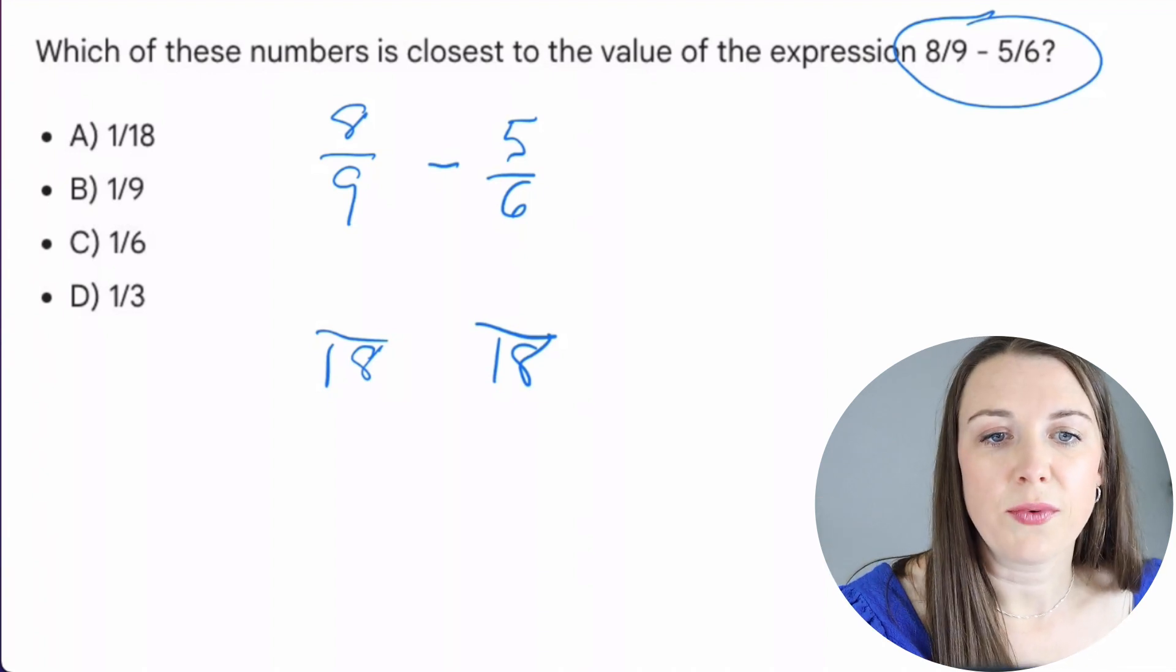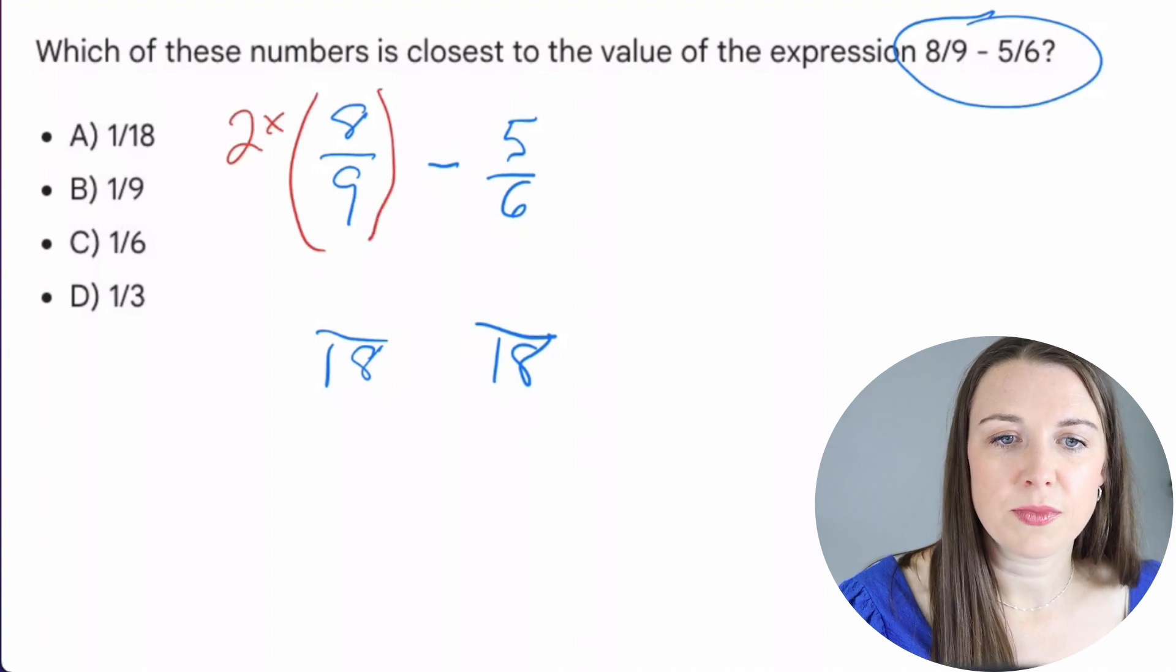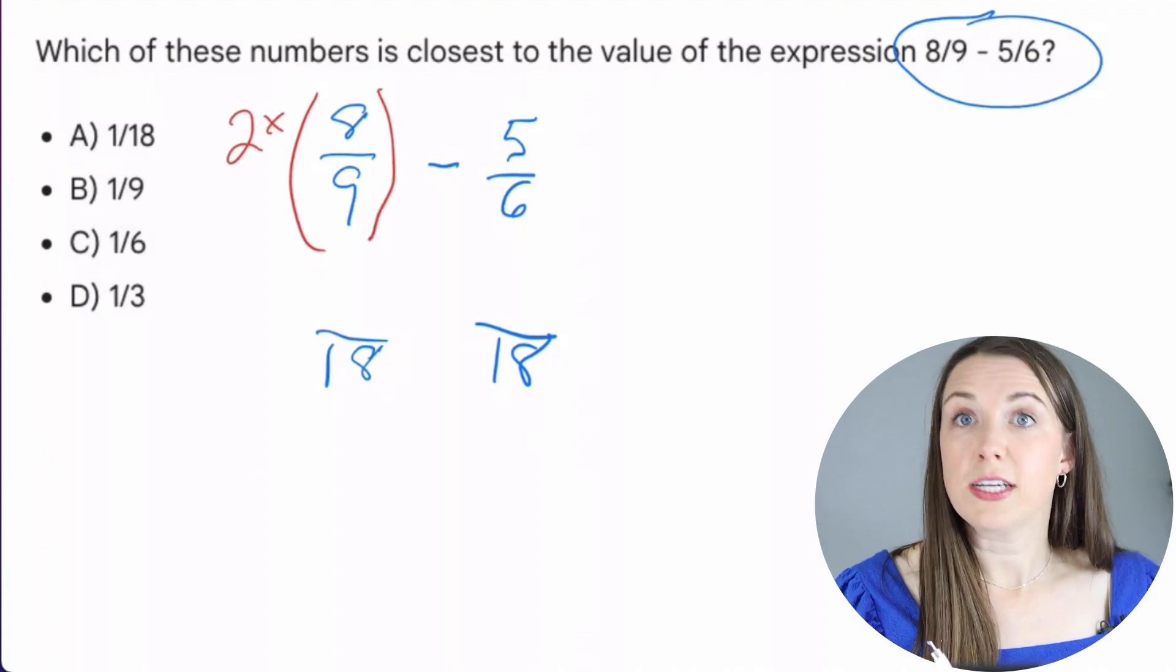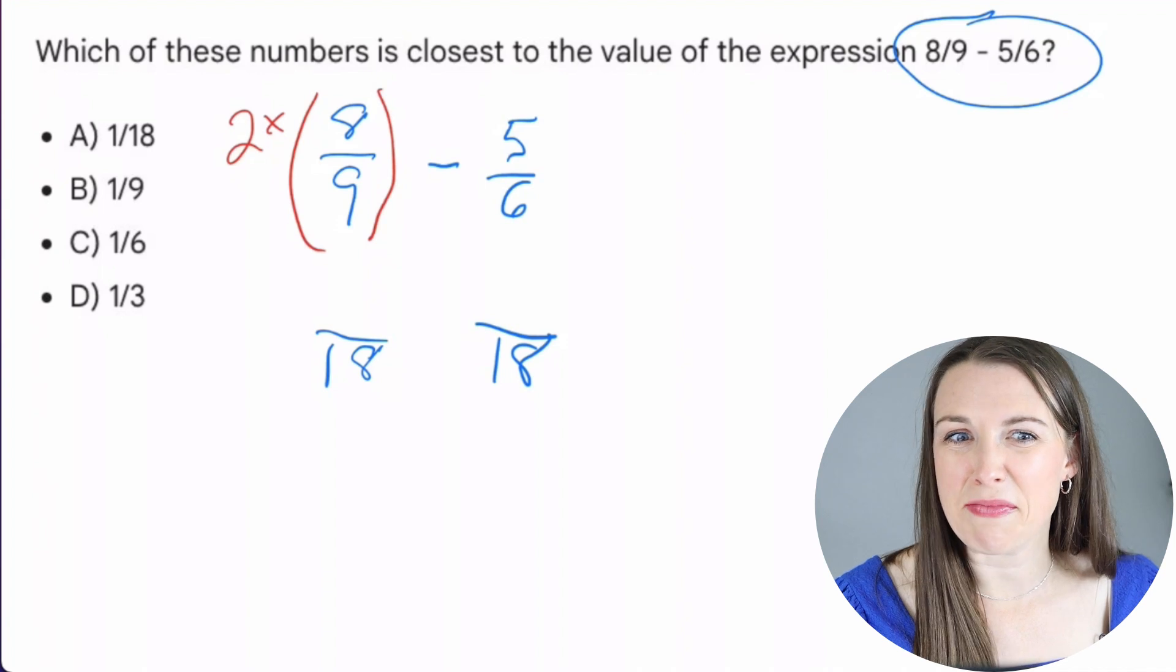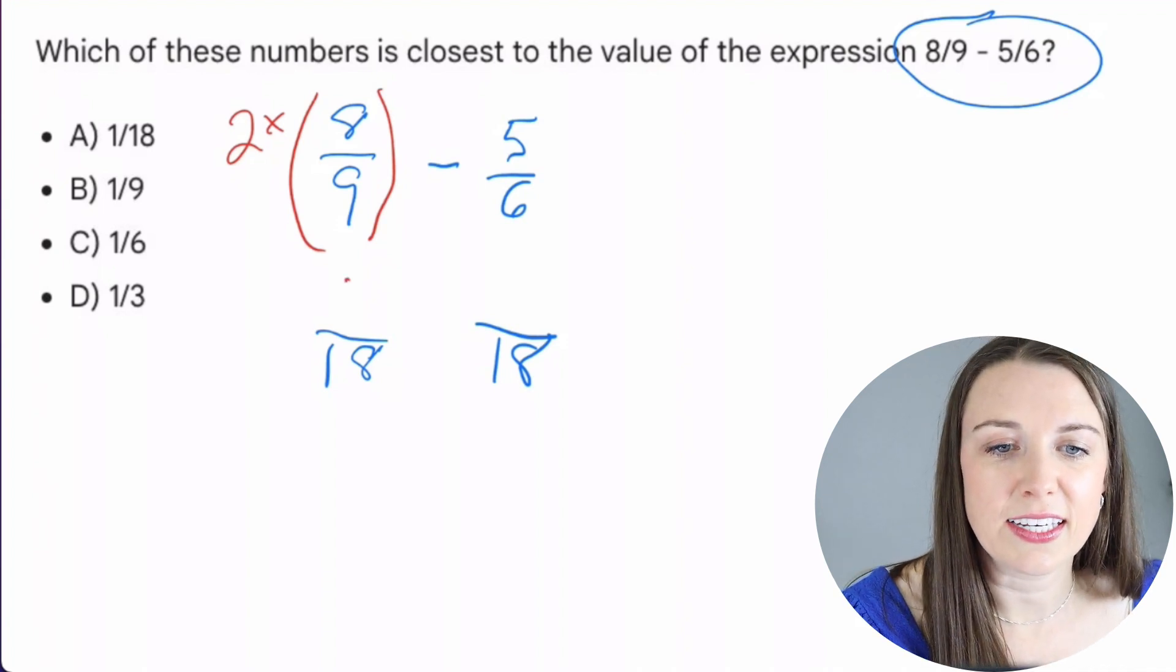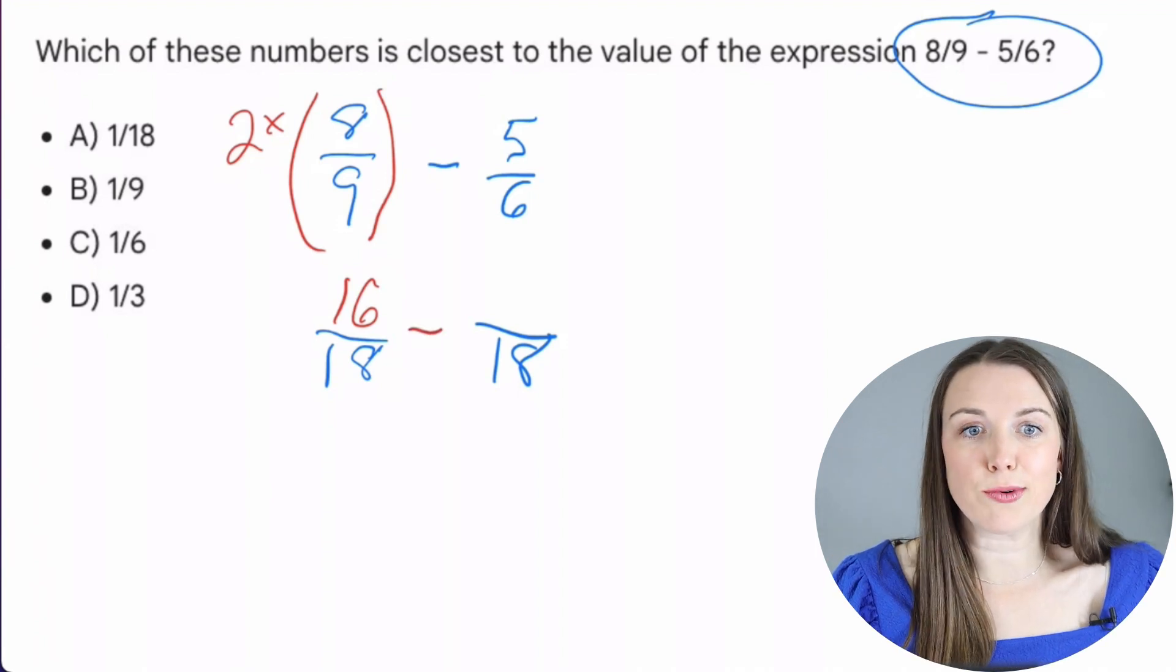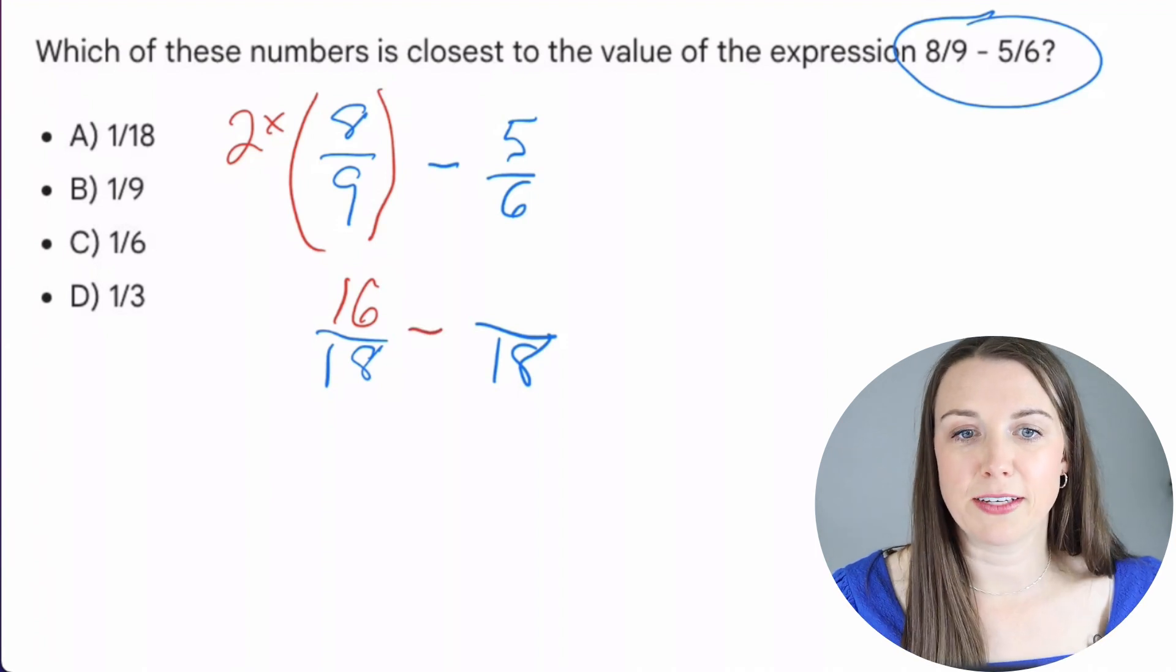Two, right? So I'm going to take both of these and I'm going to multiply it by two. So nine times two gives me that 18 on the bottom. And then two times eight gives me 16. So now I know 16/18 is equal to 8/9.